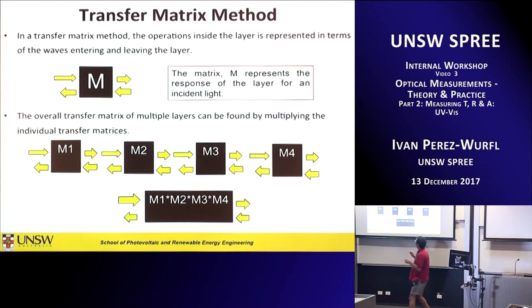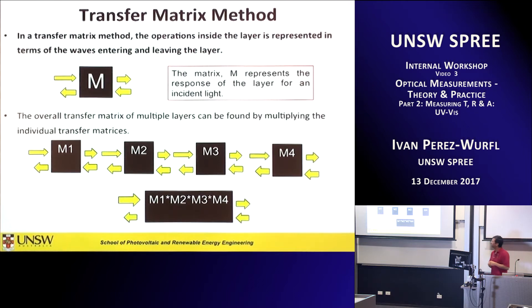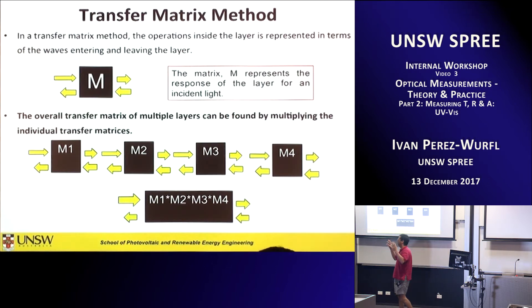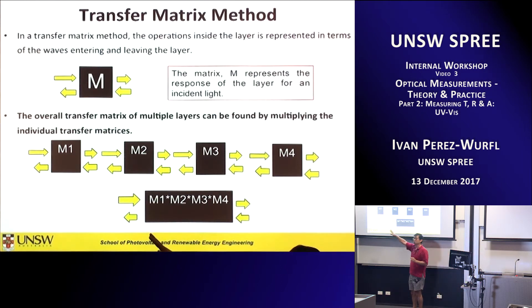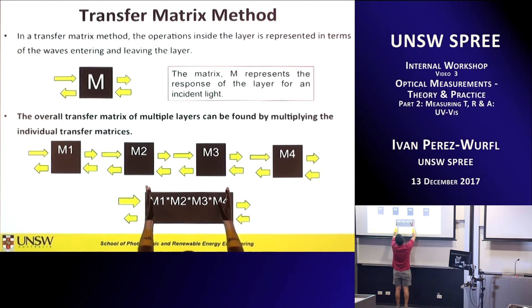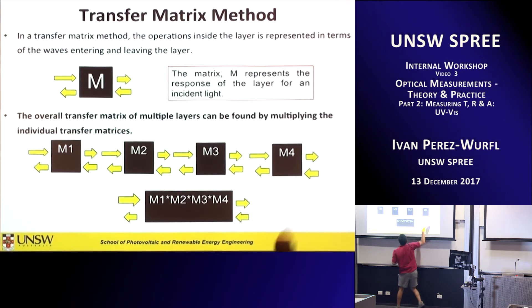The idea is you represent a layer based on four numbers — a four-term matrix representation for that layer. If you stack another layer, all you need to do is add the transfer matrix for that other layer. If you need 1,000 layers, you put 1,000 matrices in series. All you need to do is multiply one by the other, and in the end the product of all of them gives you the reflectance and transmittance of the system.